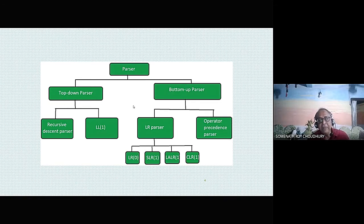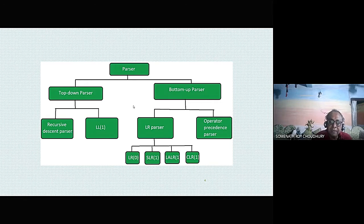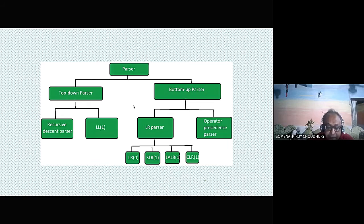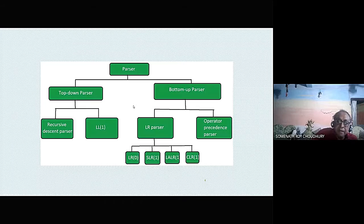Indirect left recursion occurs when A goes to B and B goes to A followed by some string. This left recursion cannot be present in recursive descent parsing, but we can handle it by left factoring. After left factoring the grammar, we can proceed with recursive descent parser. However, the negative point of recursive descent parser is that it can backtrack, and may not always take linear time.